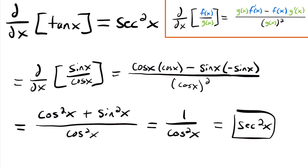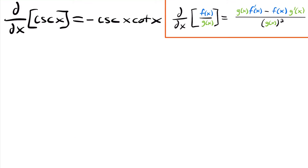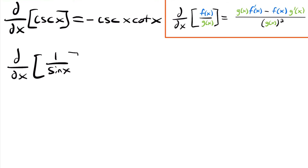Let's look at one more trig derivative: the derivative of cosecant x equals negative cosecant x times cotangent x. Let's prove this using the quotient rule. Although it doesn't look like a quotient, we can rewrite cosecant x as 1 over sine x. So this is the derivative of 1 divided by sine x — now we have a quotient we can apply the quotient rule to.